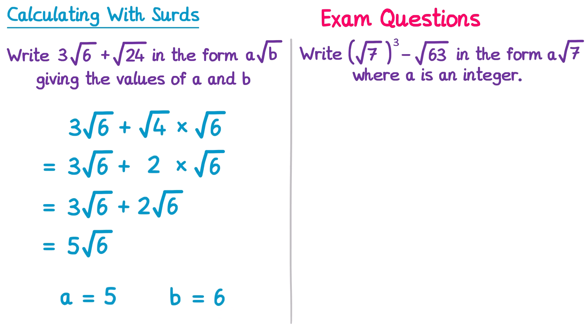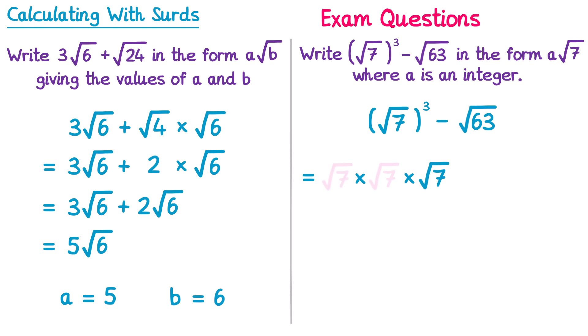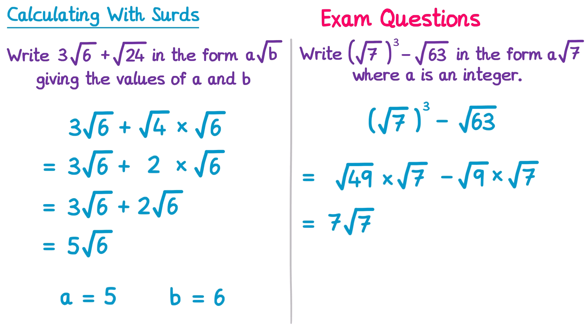Let's try one more: write the expression in the form a root 7, where a is an integer. We start with the square root of 7 cubed — cubing means multiplying by itself three times: the square root of 7 times the square root of 7 times the square root of 7. Multiplying the first two gives the square root of 49, which is 7. So it's 7 times root 7, or 7 root 7. Then we subtract the square root of 63, which splits into the square root of 9 times the square root of 7, since 9 times 7 is 63. The square root of 9 is 3, so we subtract 3 root 7. Now we have 7 root 7 minus 3 root 7: 7 minus 3 is 4, so the answer is 4 root 7.